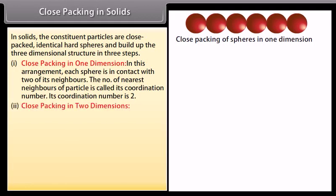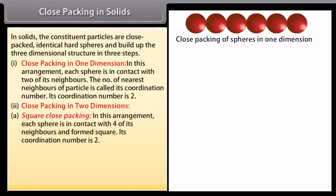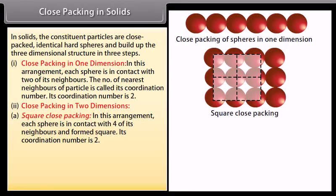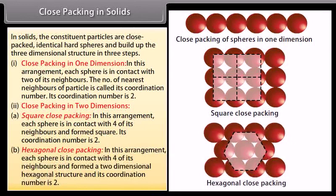Close packing in two dimensions: In square close packing, each sphere is in contact with four of its neighbours and forms a square arrangement. In hexagonal close packing in two dimensions, each sphere is in contact with four of its neighbours and forms a two dimensional hexagonal structure, with a coordination number of 6.